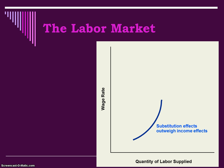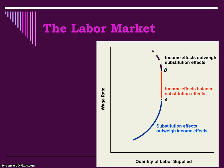Here's what this looks like on the supply curve for labor: at one point the substitution effect outweighs the income effect; at another point they balance each other out; and at very high wage rates the income effect outweighs the substitution effect. Some people decide they're going to back off — they won't work as much because they value their leisure time over earning more money. They have enough money and don't need any more. This explains why the labor supply curve sometimes has an interesting backward-bending shape.